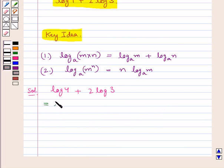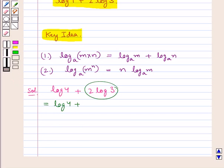This could be further written as log 4 plus, where 2 log 3 could be written as log 3 square using this law.